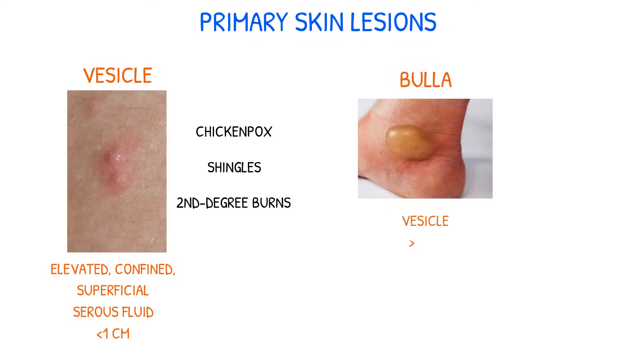A bulla is a vesicle greater than one centimeter in diameter, also known as a blister. One example of a bulla is Pemphigus vulgaris.